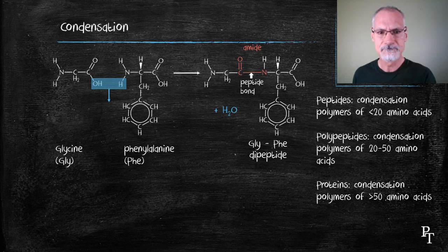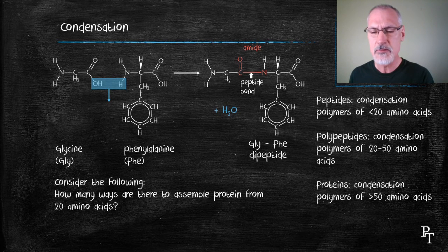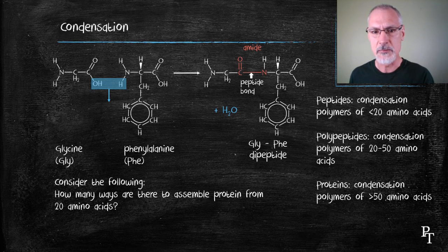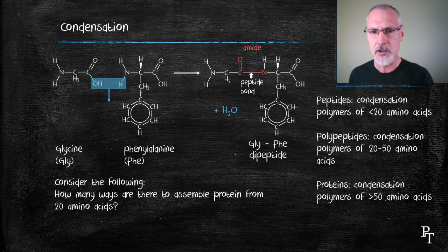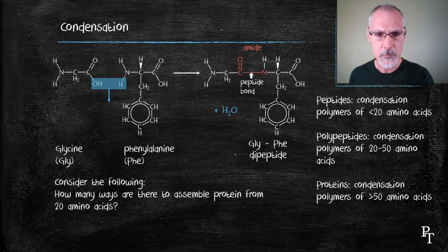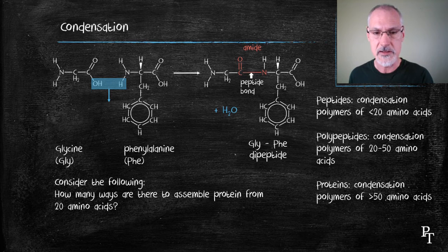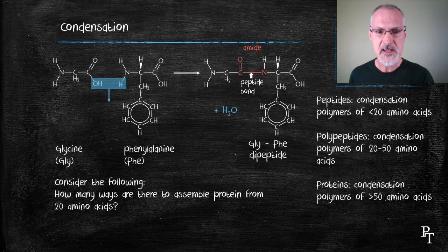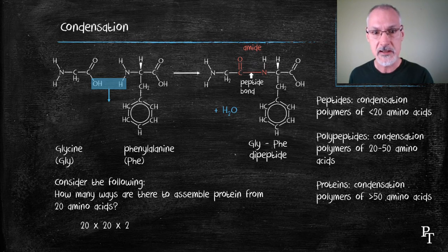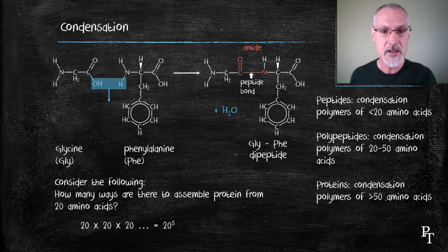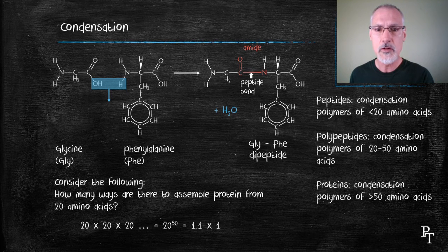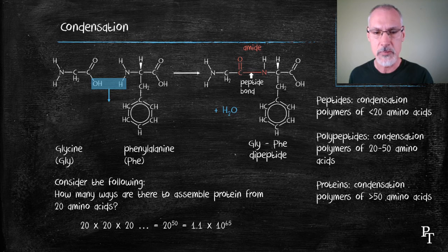Consider, if you will, the following. If we use 20 amino acids to essentially make a protein, how many possible combinations of amino acids are there to make a protein which contains, say, 50 units? So you have 20 choices for the first, 20 choices for the second and so forth. Essentially, it would be 20 to the 50th or 1.1 times 10 to the 65 possibilities.